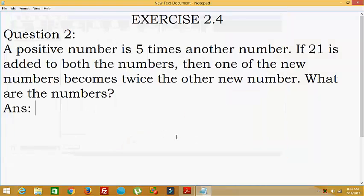Hello everybody, today we are going to discuss NCERT class 8 exercise 2.4, question number 2. A positive number is five times another number. If 21 is added to both the numbers, then one of the new numbers becomes twice the other new number.